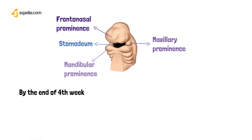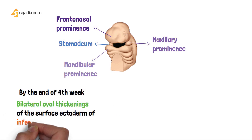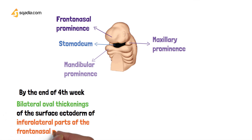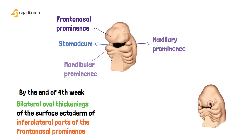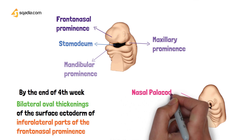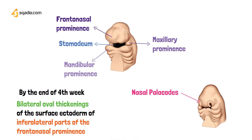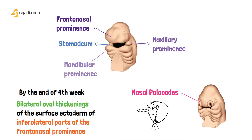By the end of the fourth week, bilateral oval thickenings appear in the surface ectoderm of the inferior lateral part of the frontonasal prominence. These are known as the nasal placodes. The nasal placodes are the primordia for the nasal epithelium, meaning in the future they're going to develop into the nasal epithelium.